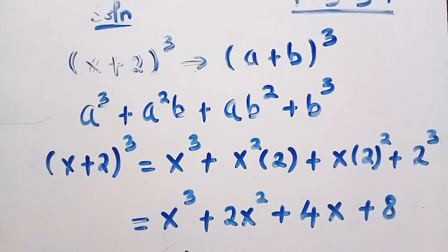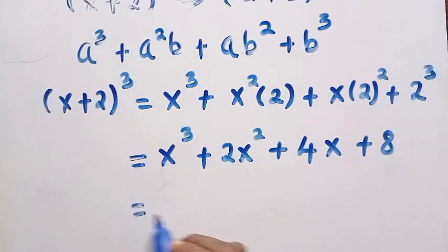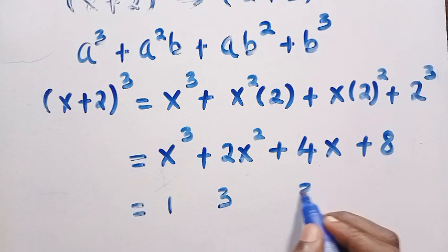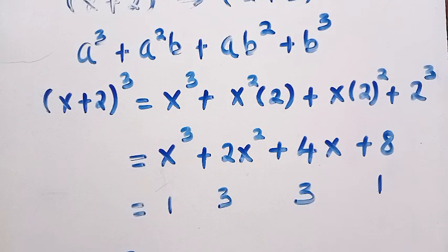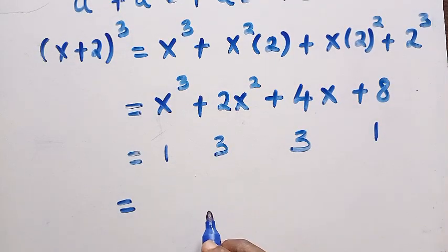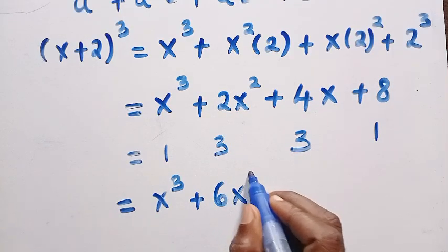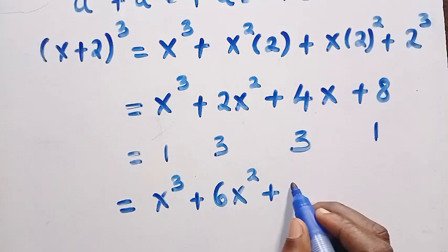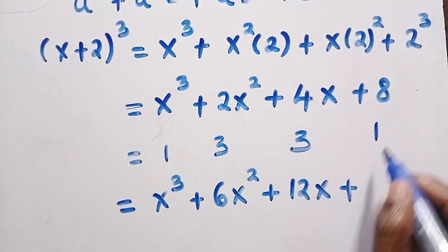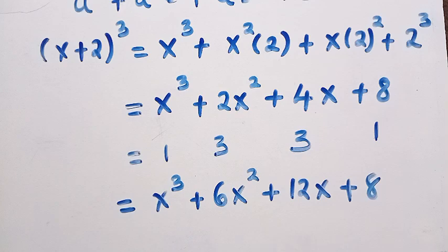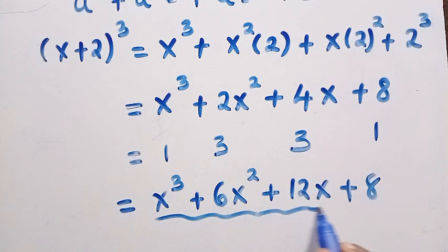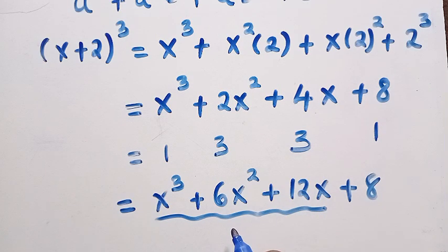We shouldn't worry that we haven't yet gotten x cubed plus 6x squared plus 12x — it's very simple, by just introducing the coefficients. The coefficients are 1, 3, 3, 1. So we multiply: the first term becomes x cubed, plus 3 times 2 giving 6x squared, plus 4 times 3 giving 12x, plus 1 times 8 giving 8. So x cubed plus 6x squared plus 12x is our domain from the given function.